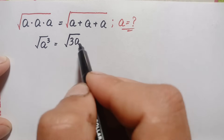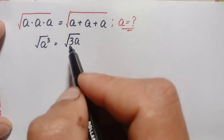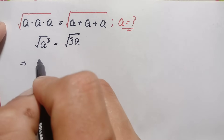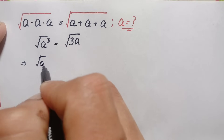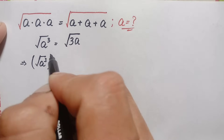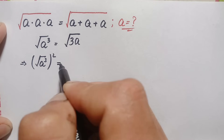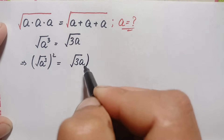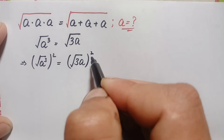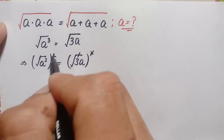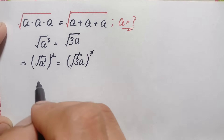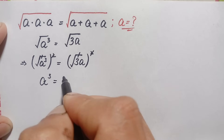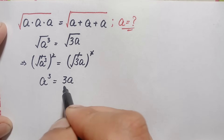We will try to eliminate the square root from both sides. To do this, we take the square on both sides. This gives us: a cube whole squared is equal to whole square root of 3a whole squared. The squares and square roots cancel on both sides, giving us a cube is equal to 3a.